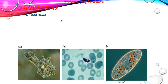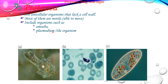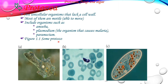To summarize: protozoa are unicellular organisms that lack a cell wall. Most of them are motile — they are able to move. They include organisms such as amoeba, Plasmodium — the organism that causes malaria — and Paramecium.